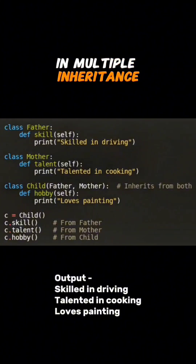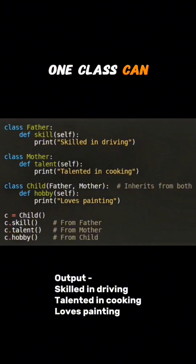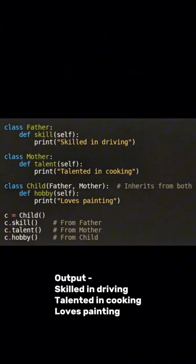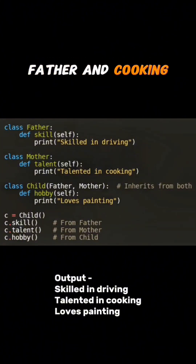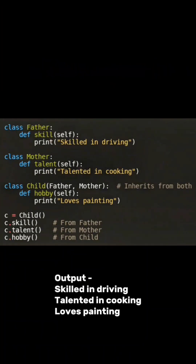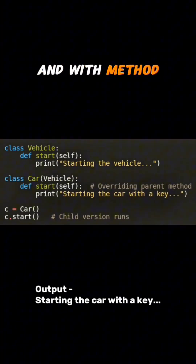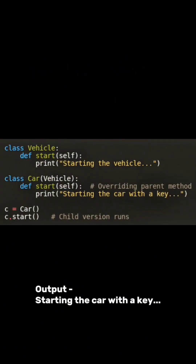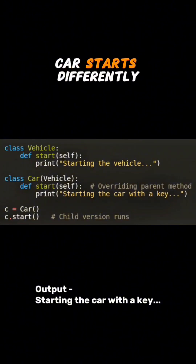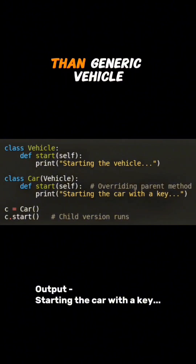In multiple inheritance, one class can learn from two parents — like a child learning driving from father and cooking from mother. And with method overriding, the child can actually change the behavior of the parent. For example, a car starts differently than a generic vehicle.